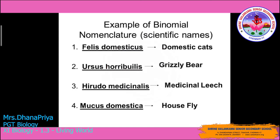Here you can see examples: domestic cat — Felis domesticus; grizzly bear — Ursus arctos; medicinal leech — Hirudo medicinalis; house fly — Musca domestica. Notice that the genus name is represented with a capital letter, the species name with a small letter, and each binomial nomenclature name is underlined.